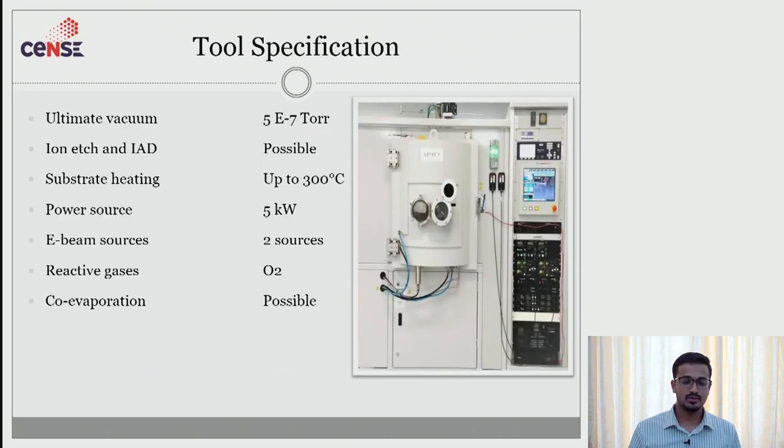So let us come to the tool specifications. The ultimate vacuum of this tool is 1E minus 7 torr and we can do ion etching and ion assisted deposition. The substrate heating can be up to 300 degree Celsius. The power source what we are using here is 5 kilowatt. E-beam sources we have two e-beam sources and we can also do reactive deposition with the help of oxygen intake. Here the co-evaporation is possible.